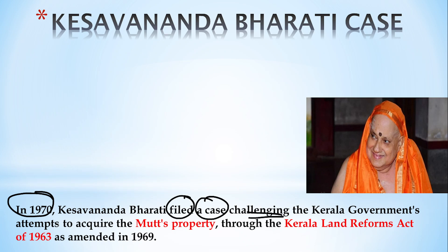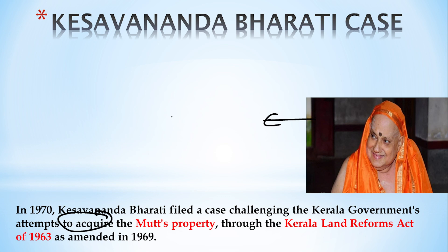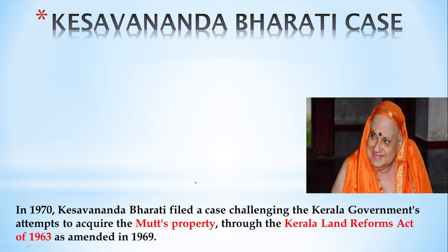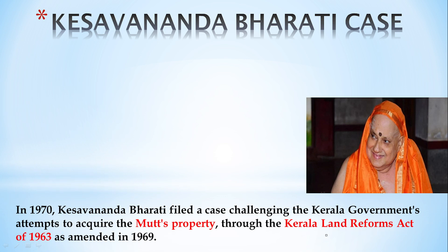Kesavananda Bharati said that the Kerala government was attempting to acquire the Mutt's property. He was from Kasargod, Kerala, and he had a Mutt called Edneer Mutt. The Kerala government was trying to acquire the property of Edneer Mutt. On this basis, his fundamental right — right to property — was violated. He challenged this under the Kerala Land Reform Act 1963, which was later amended in 1969. And that is how, in 1970, Kesavananda Bharati filed a case against the Kerala government.